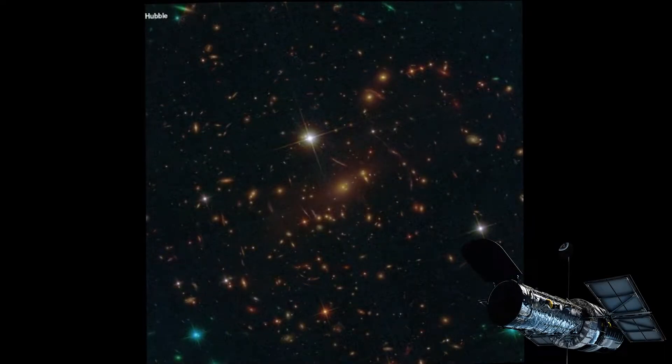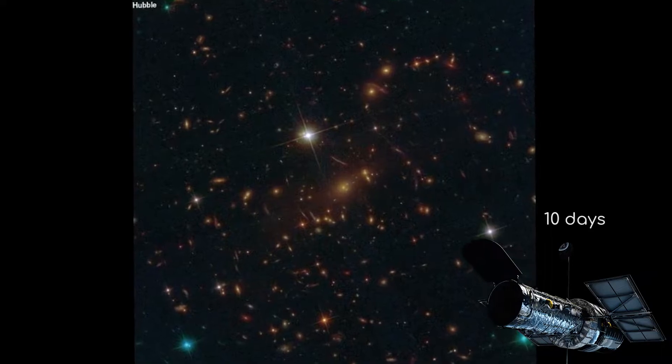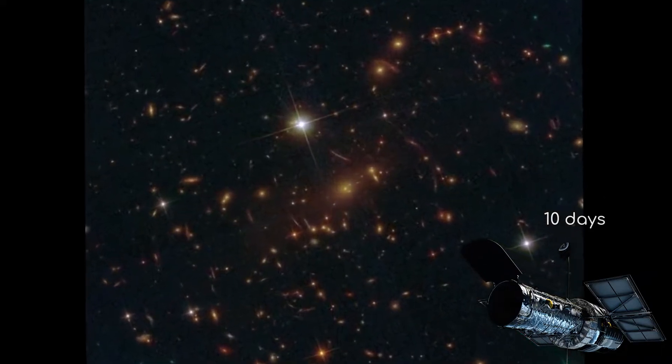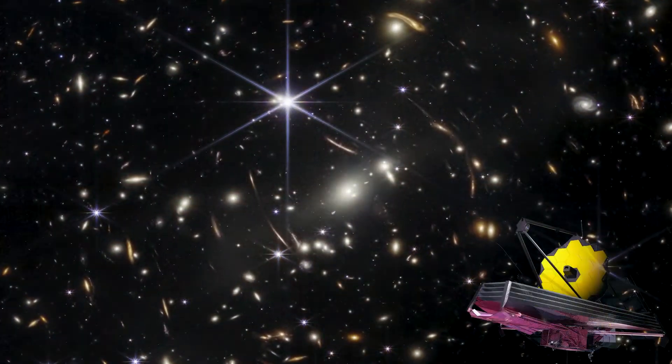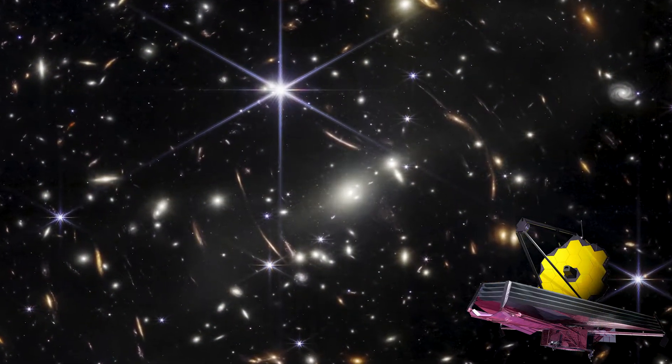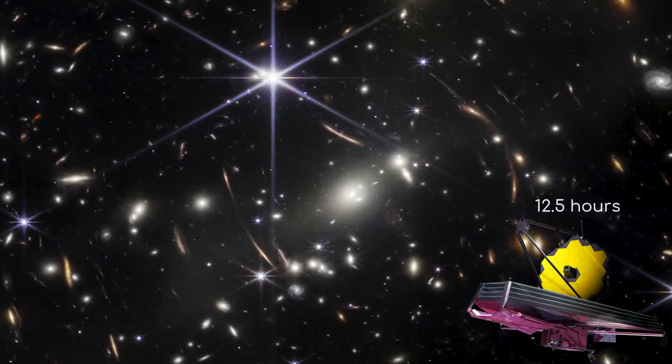Hubble took its image by staring at this patch of sky for 10 days, slowly gathering every photon it could from this region of space and compiling them into a single image. James Webb, on the other hand, took only half a day taking its own image.